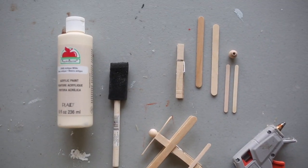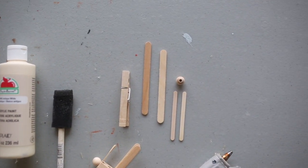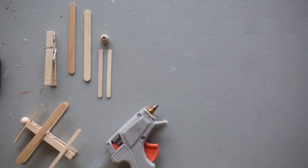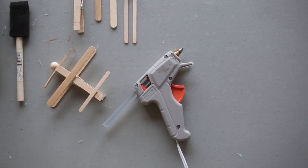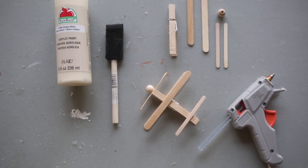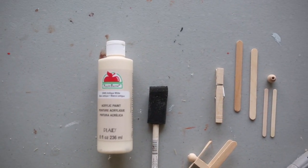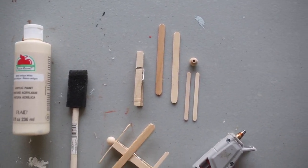All you need for this project is a wooden clothespin, some popsicle sticks - you'll need two in a regular size and two in a mini size - a little wooden bead, a hot glue gun, some acrylic paint in any color, and a foam brush.